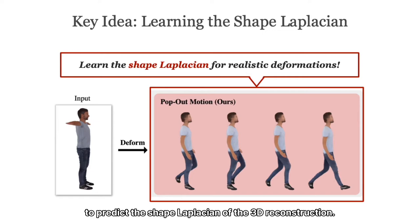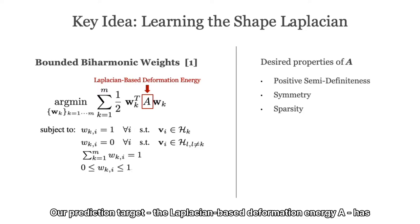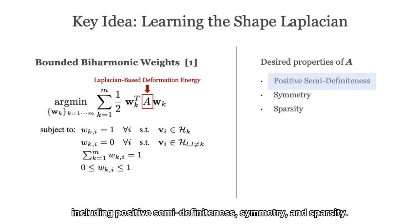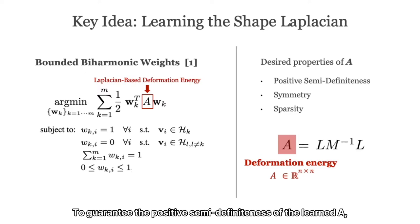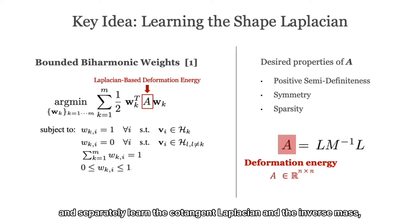Our prediction target, the Laplacian-based deformation energy A, has several desired properties, including positive semi-definiteness, symmetry, and sparsity. To guarantee the positive semi-definiteness of the learned A, we propose to decompose the deformation energy by its definition, and separately learn the cotangent Laplacian and the inverse mass, such that the deformation energy can later be recovered using them.